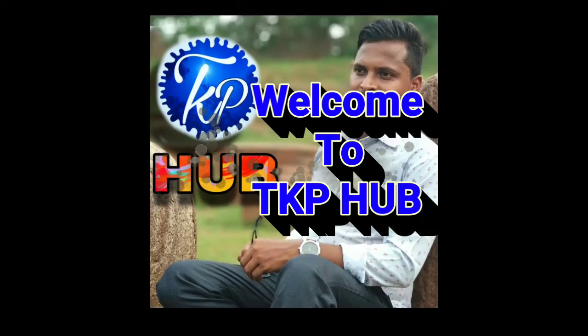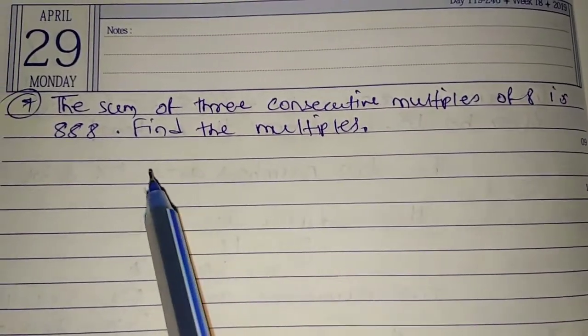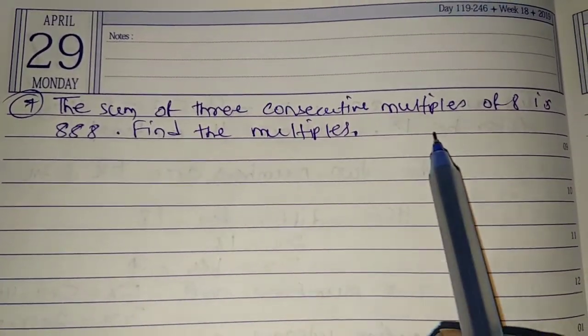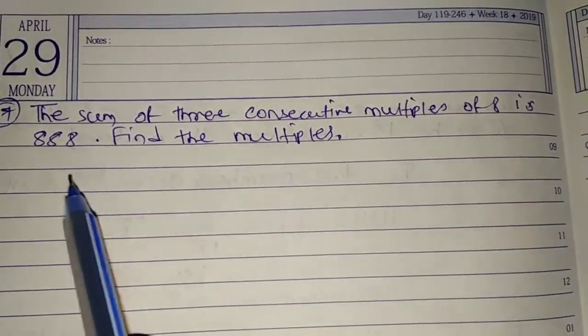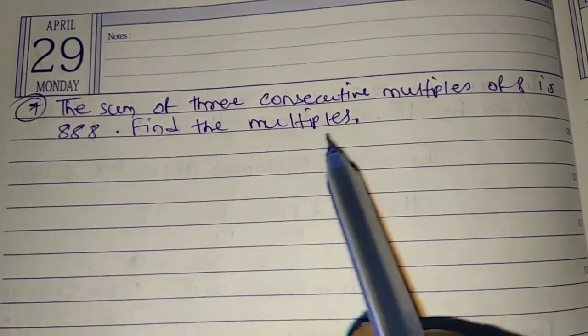Welcome to my channel TKB hub. The next one is the sum of three consecutive multiples of 8 is 888. Find the multiples. Consecutive multiples means if...